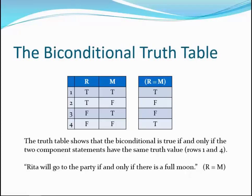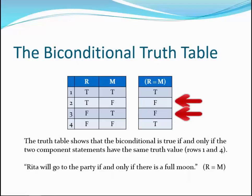Here's the truth table for biconditionals, also called logical equivalents. In this example, 'Rita will go to the party if and only if there is a full moon' is expressed as R if and only if M. The base table on the left stays the same, and the table on the right shows the truth values for the connective. If R and M have the same truth value — either both true or both false, as in rows one and four — the biconditional is true. The other two combinations, in which the truth values are different, result in the biconditional being false.